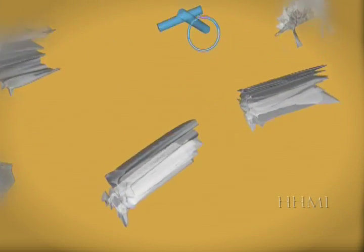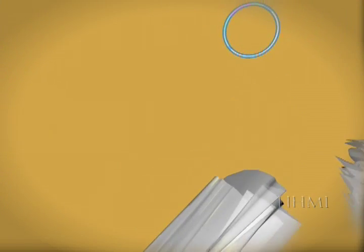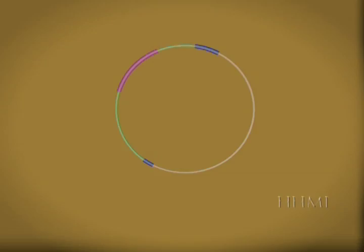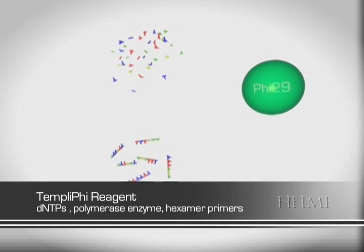The next step is to duplicate or amplify the plasmids. A process called rolling circle amplification is used. To start the rolling circle amplification, we add a templify reagent to the solution in the wells.